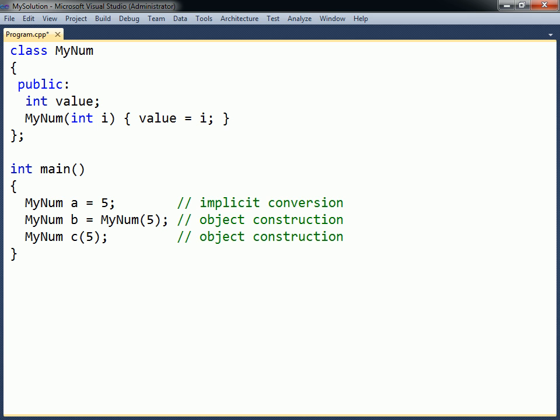These conversions will not only work for the specific parameter type, but also for any type that can be implicitly converted to it. For example, a char can be implicitly converted to an int, and can therefore be implicitly changed into a MyNum object as well.